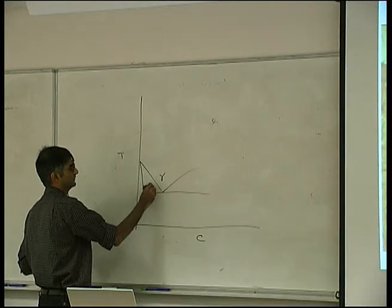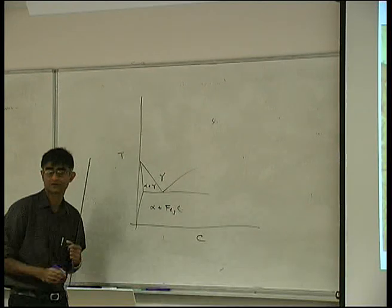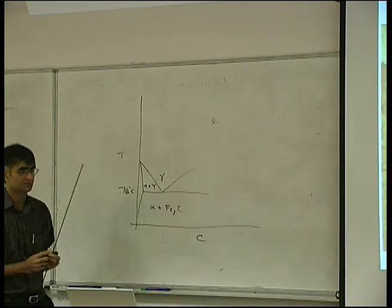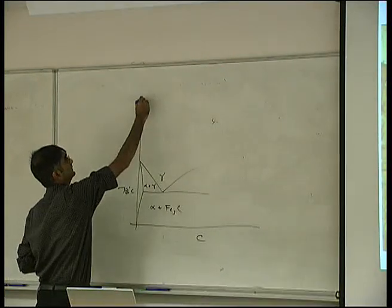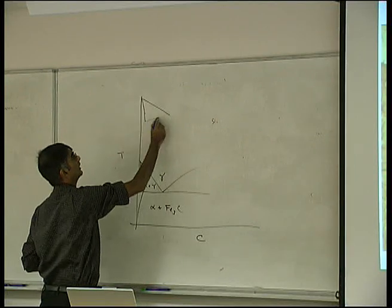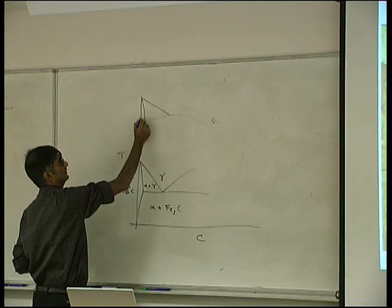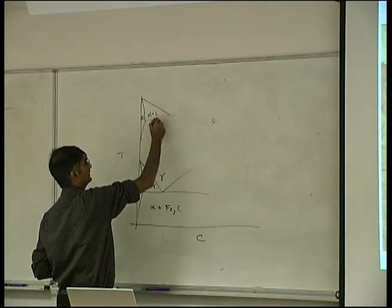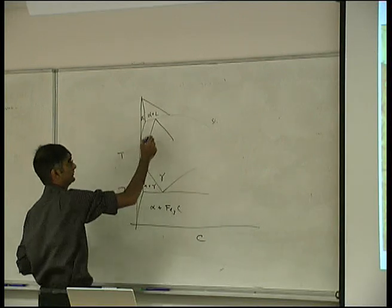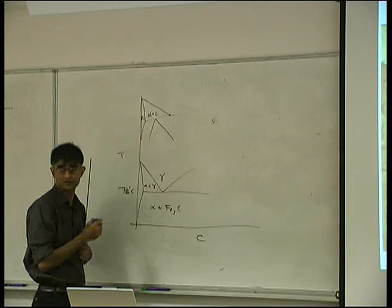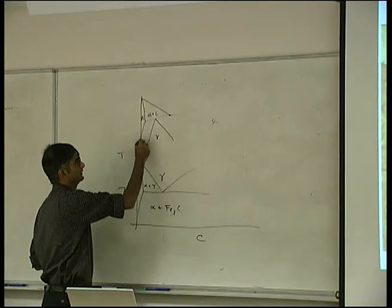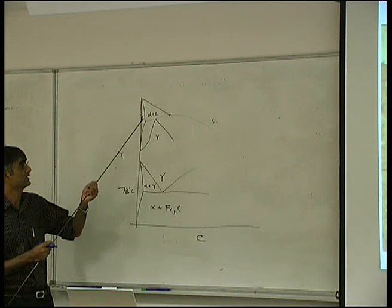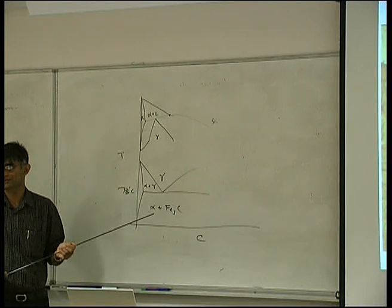Most people are familiar with the lower part of the phase diagram: austenite, ferrite and austenite, and cementite, with the eutectoid temperature at about 723 degrees centigrade. The higher-temperature part of the phase diagram includes alpha (ferrite), alpha plus liquid, and a peritectic reaction where alpha of one composition reacts with liquid of another composition to give gamma. So first you get solidification as alpha (delta ferrite), which then transforms to gamma (austenite), which then transforms back into alpha. That is entirely due to the strange magnetic properties of iron.